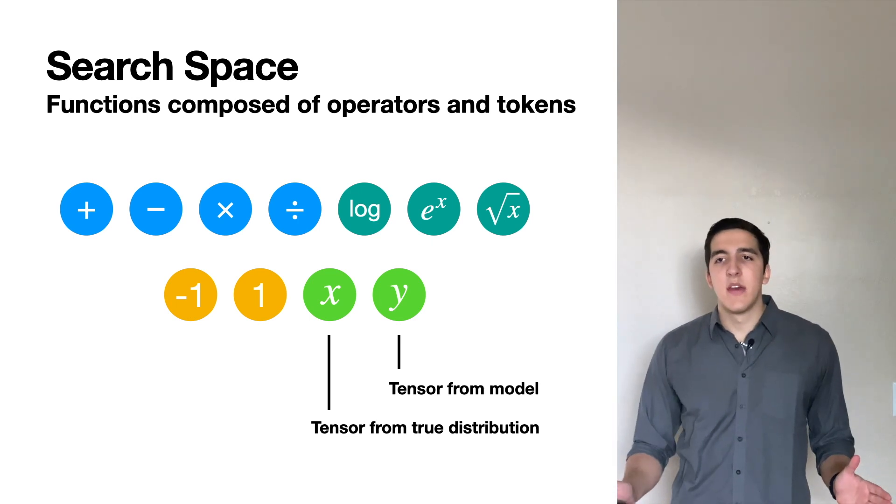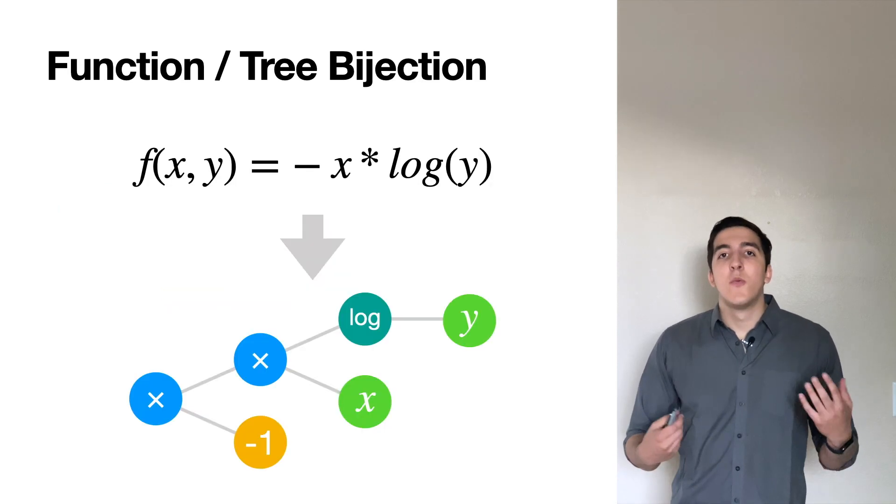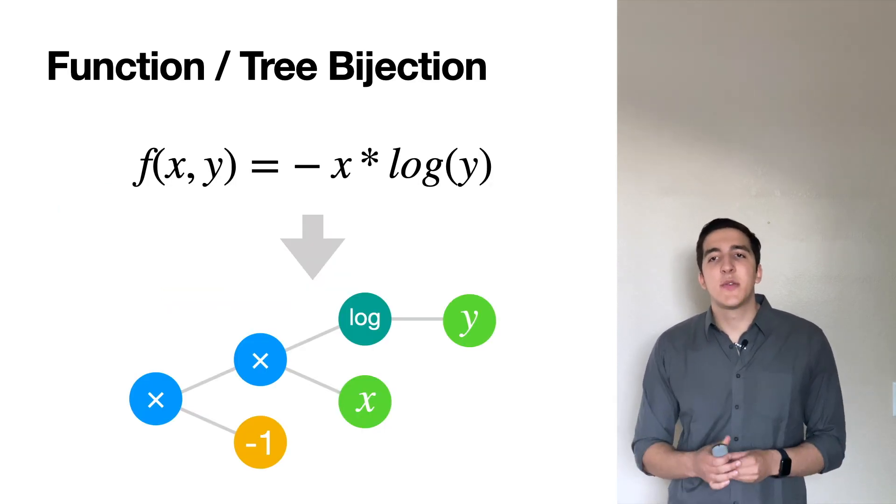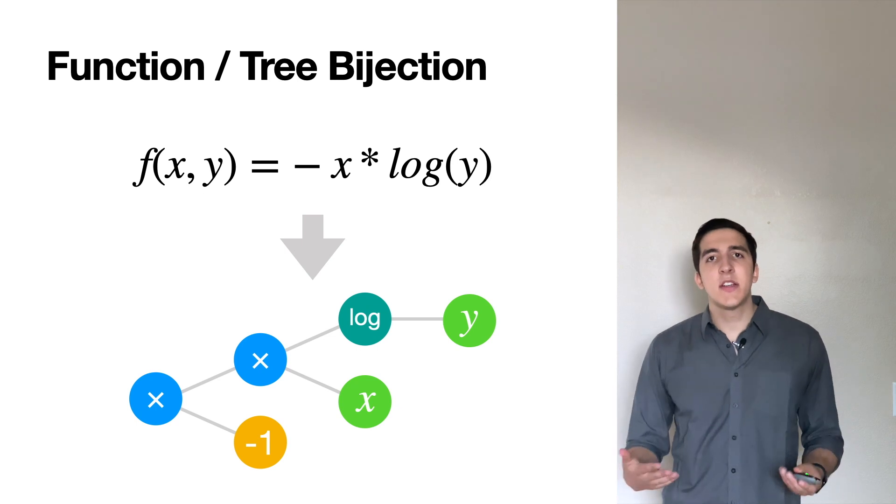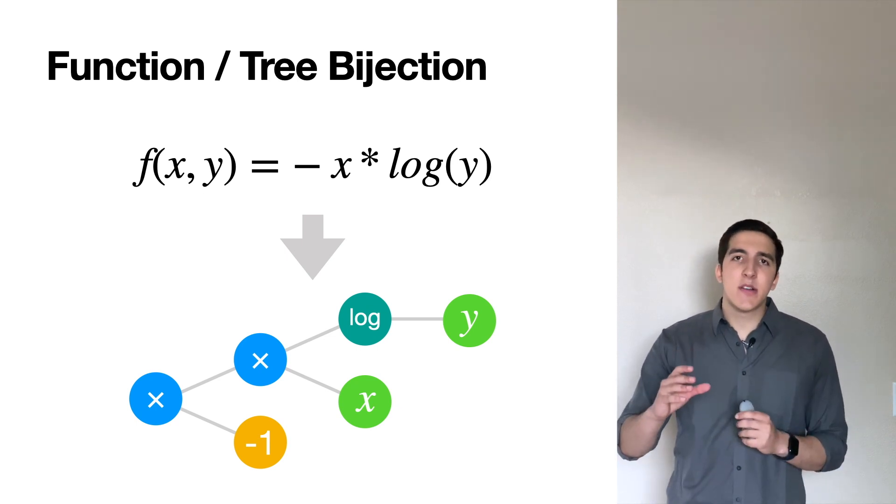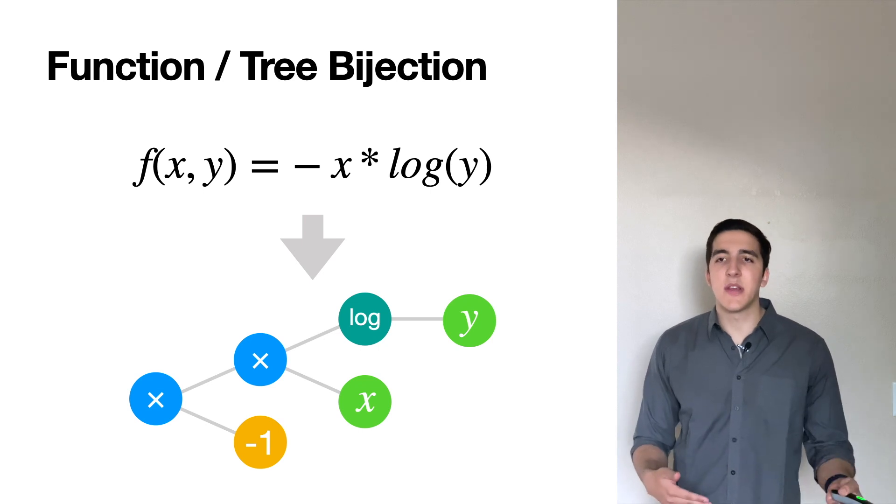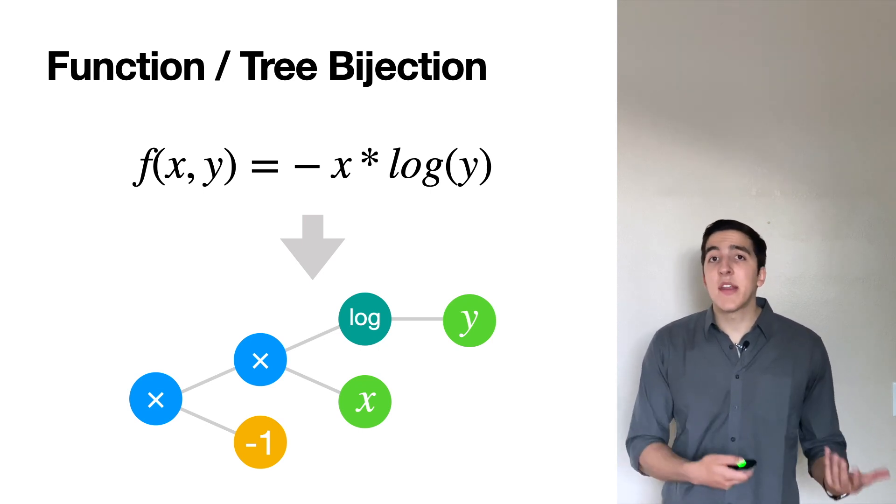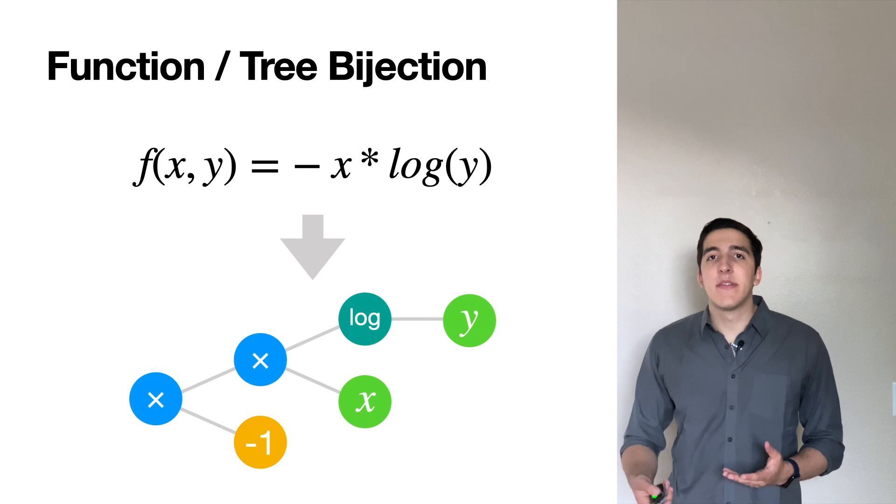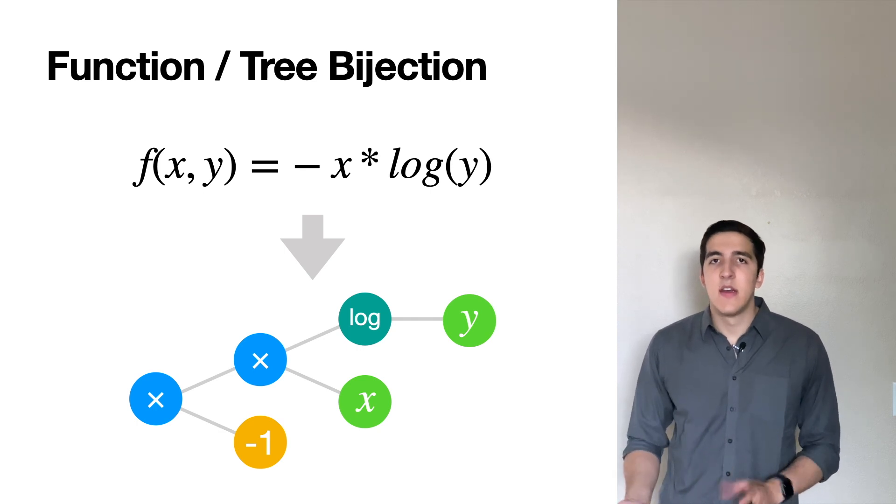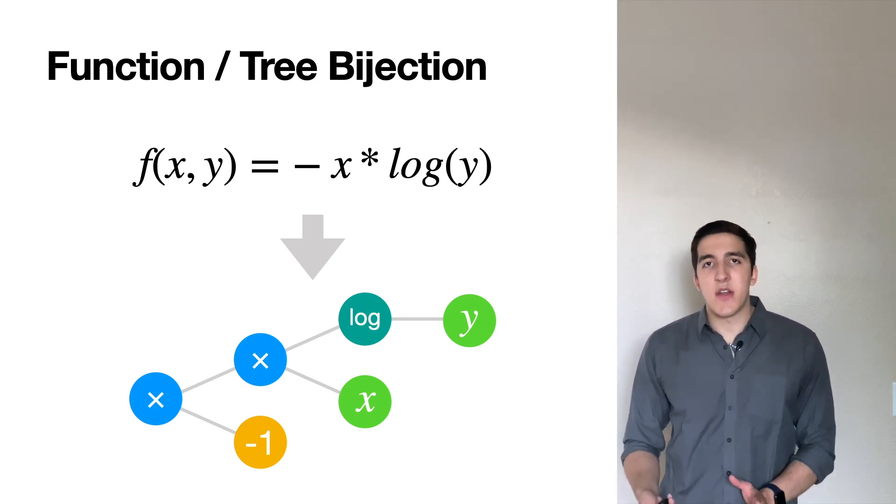So we have these tokens and operators. How do we represent them? We have this bijection between functions and trees. Functions are implicitly these hierarchical structures, so we can very easily represent any function as a tree, with operators as non-leaf nodes, and the tokens as leaf nodes.